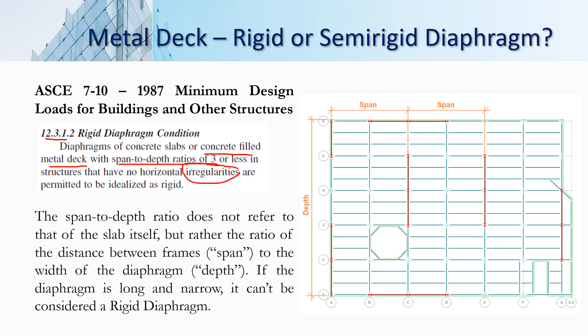To find the span-to-depth ratio, note that this ratio does not refer to that of the slab itself. Rather, span means the distance between the frames, and depth means the width of the diaphragm. So if the diaphragm is long and narrow — meaning the span is much greater compared to the depth — it can be considered a rigid diaphragm.